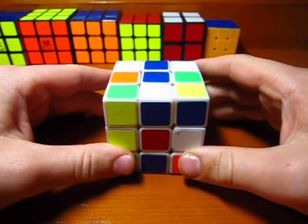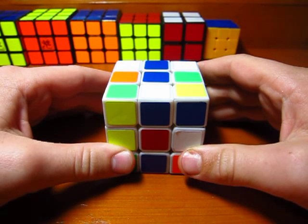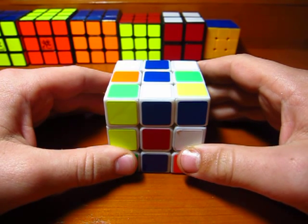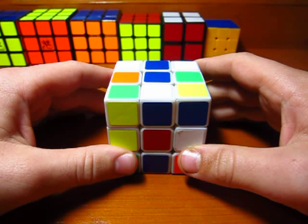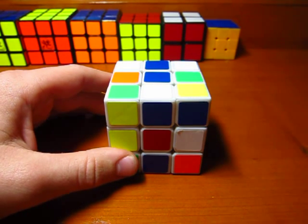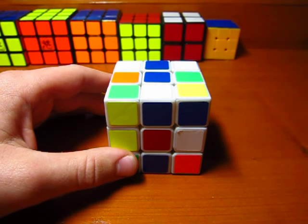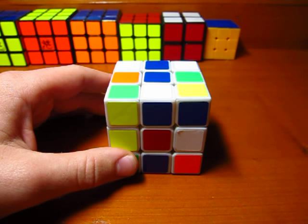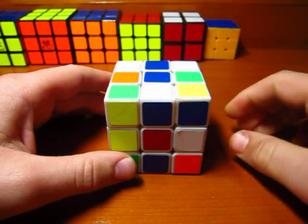This tutorial is on how to deal with basically the things that everyone hates in 3x3 Blindfolded, namely parity, cycle breaks, twisted corners, and flipped edges. So I'm mostly going to be talking about the memorization aspects of these things, but I may talk about execution a little bit too.